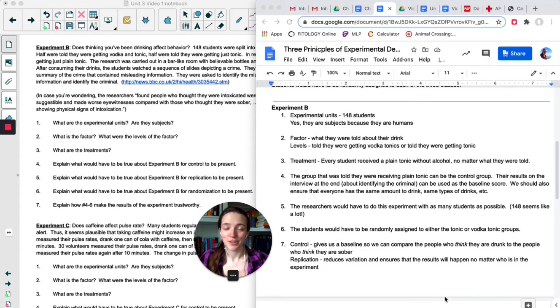Okay, so this is based on a real study. You can click that link and read it if you want. I've got the answers on the right here. Our experimental units are the students and because they are human beings, they are considered subjects. The factor is what they were told about their drink and the two levels are either being told they have an alcoholic drink or told they are having a non-alcoholic drink. The treatment is everyone gets a non-alcoholic drink after they are told what they are getting.